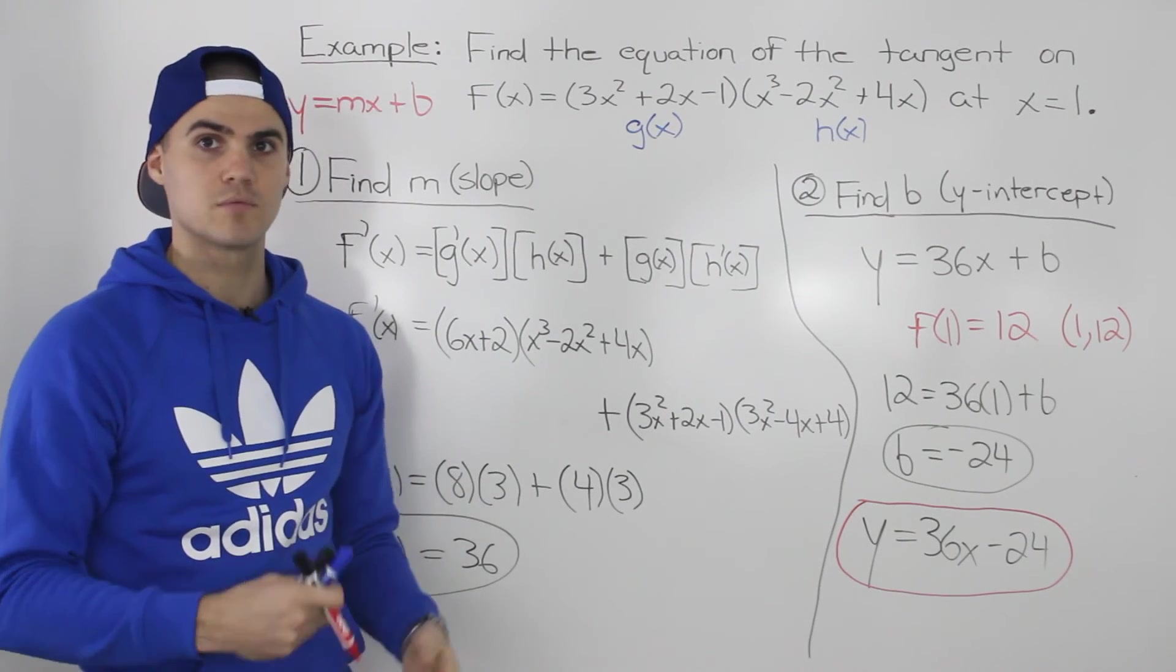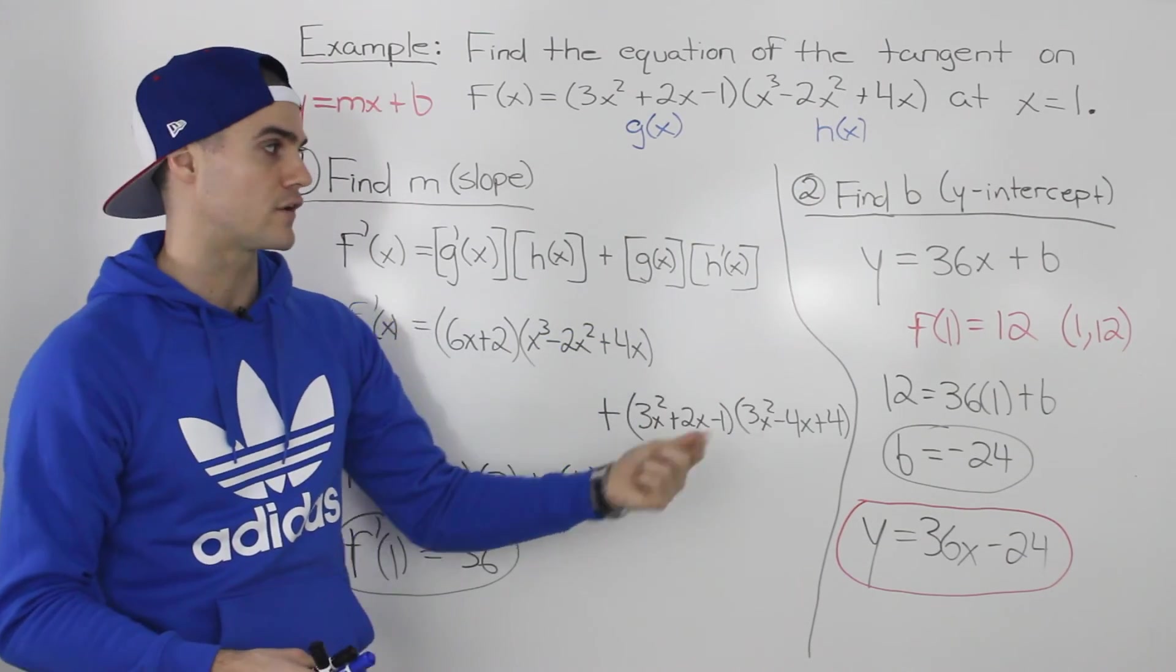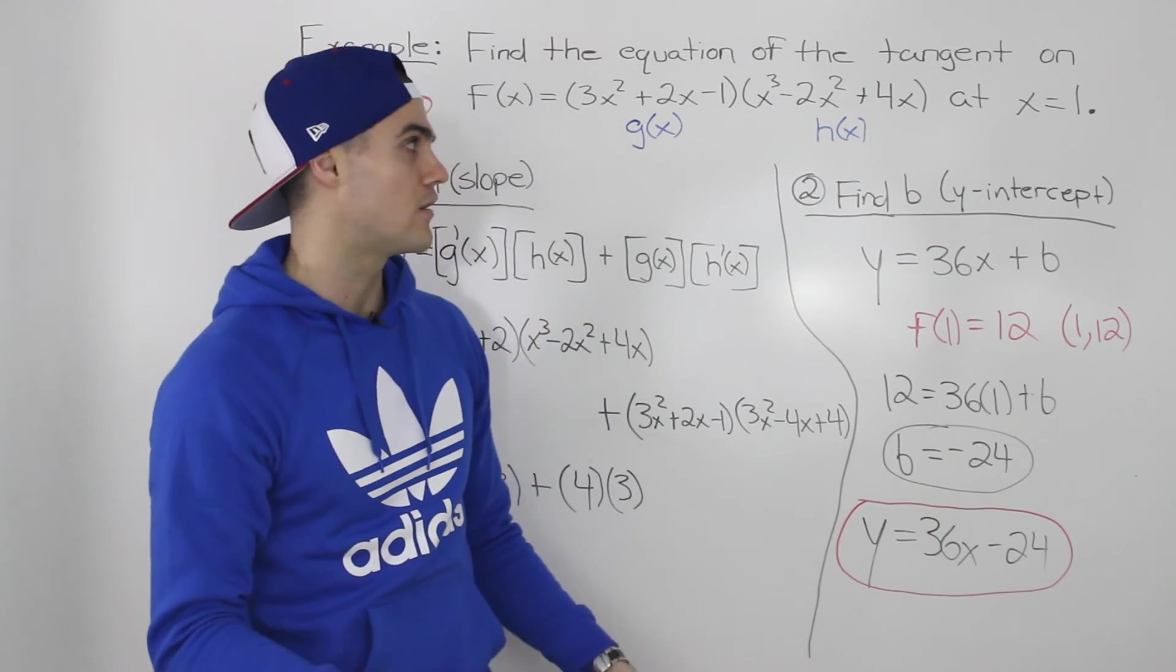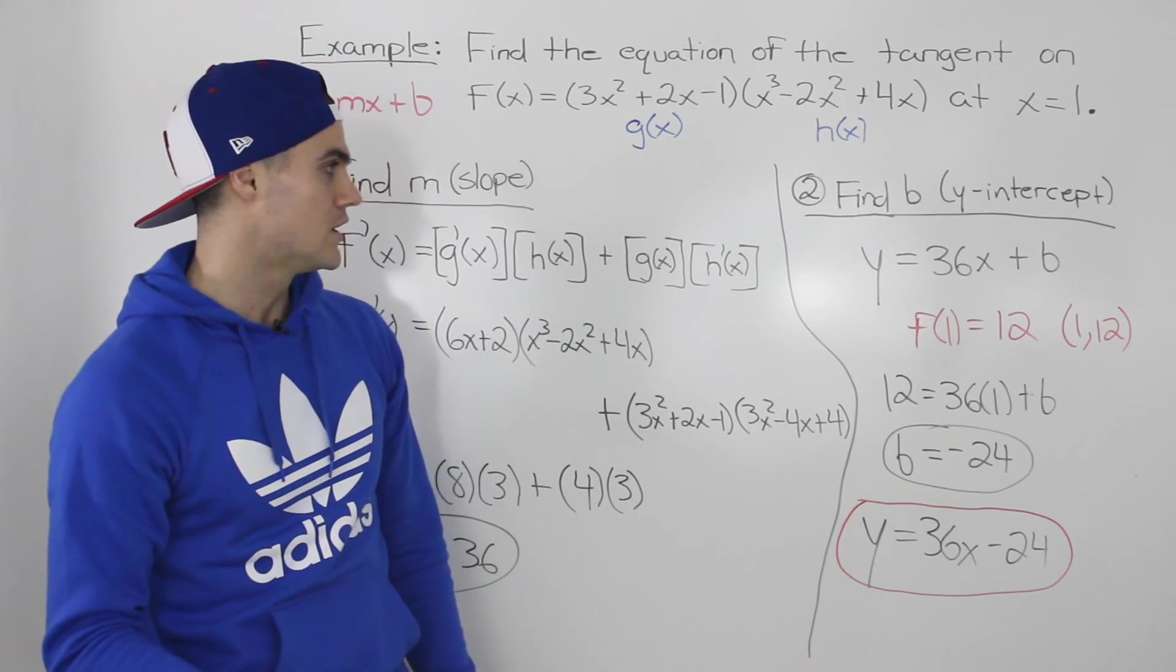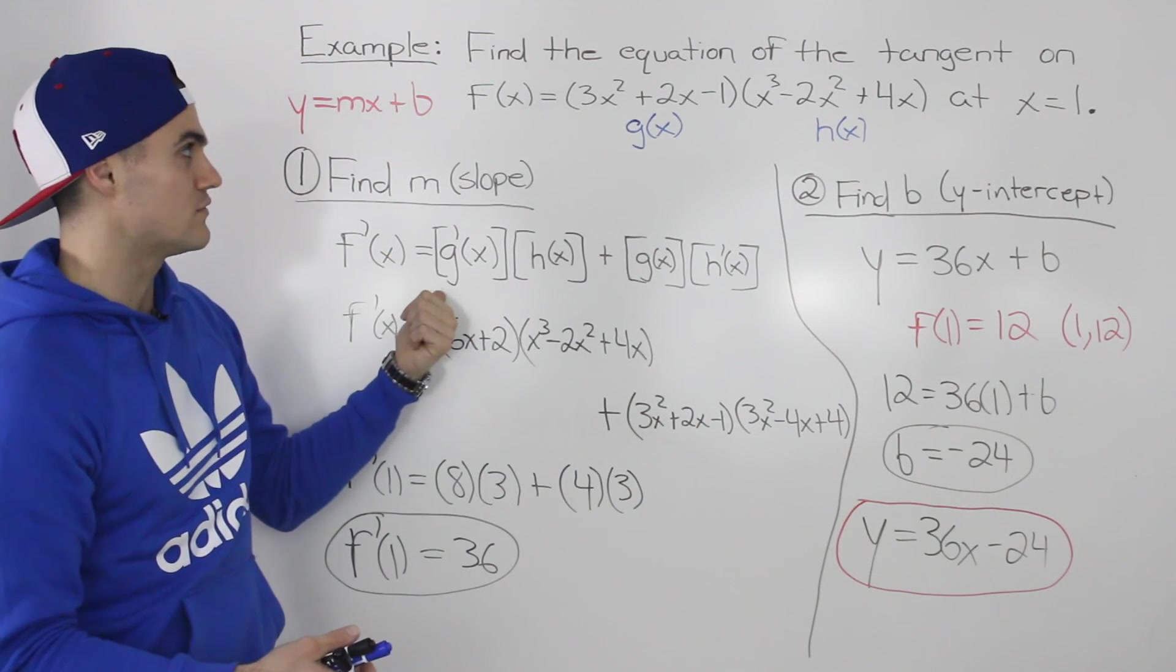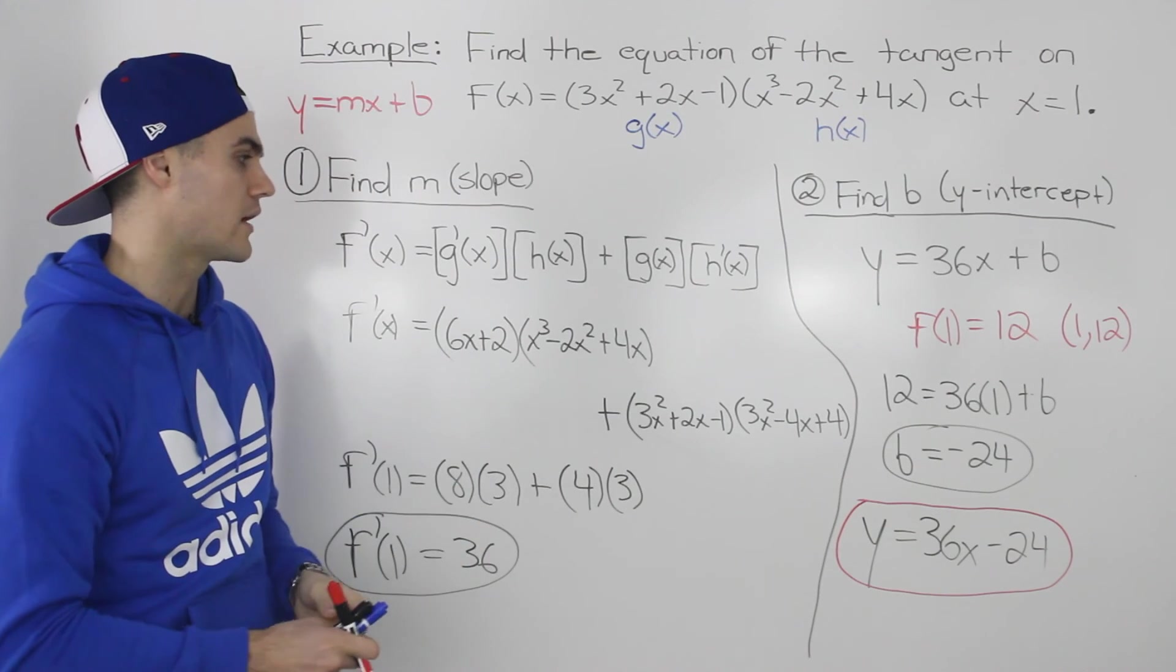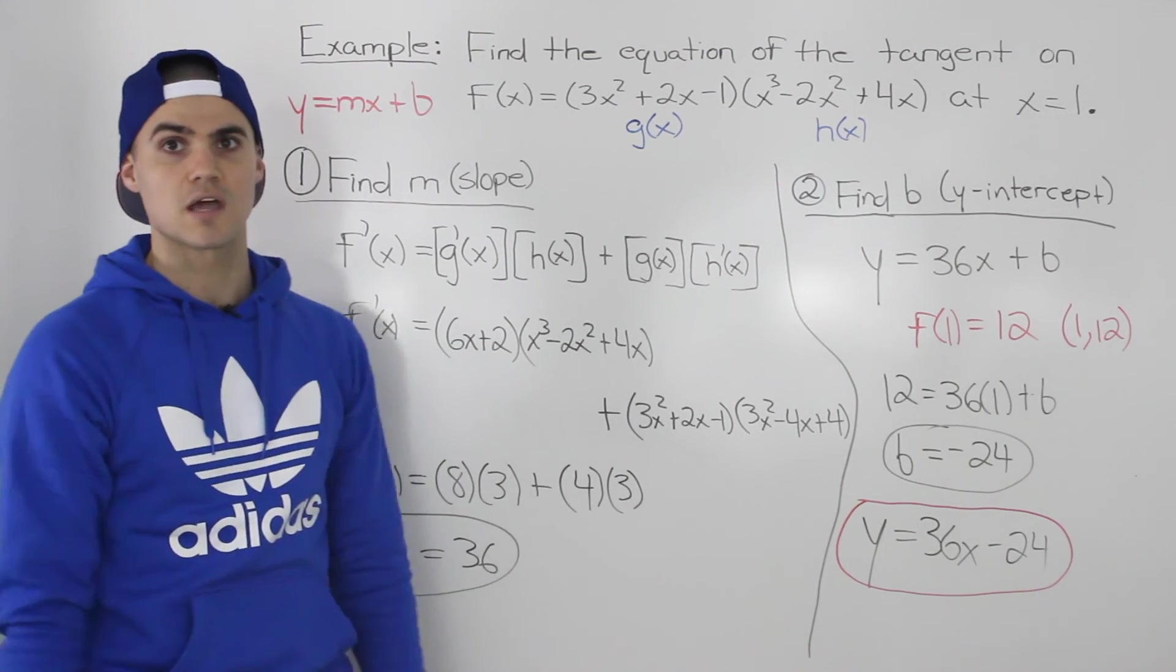Same steps that we've been doing before: find the slope of the tangent, then find the b value with the coordinate on the function. Sometimes you'll be given the full coordinate, sometimes you're going to have to find the y value, like in this case, by plugging in that x value in the original function. So the steps are the same, but the mechanics were a little bit different when we found the derivative. We applied the product rule, and we haven't really dealt with examples where we're finding the equation of a tangent using the product rule. So it was a bit of a unique case, but the overall steps are the same.